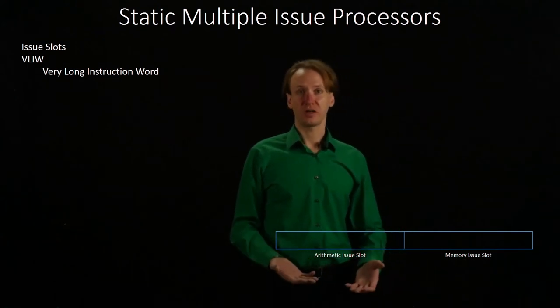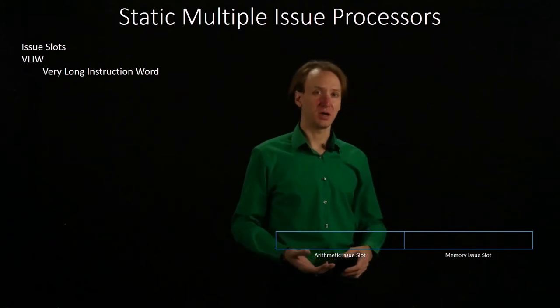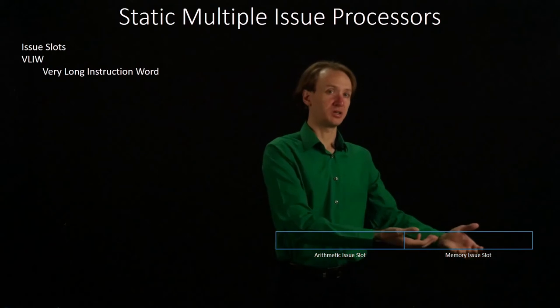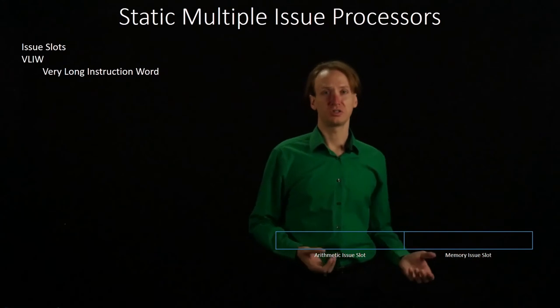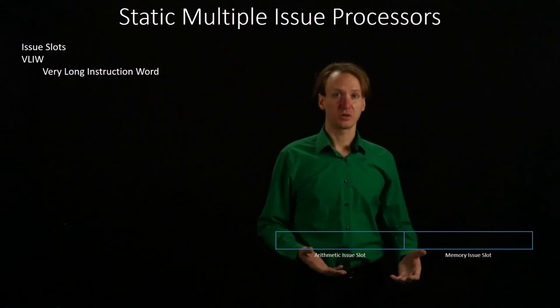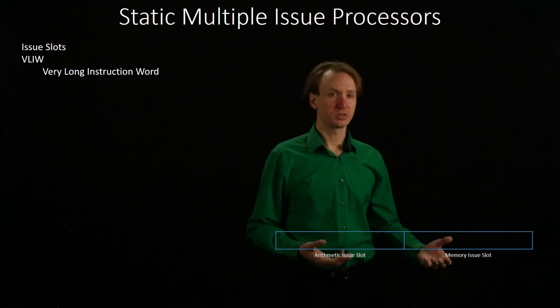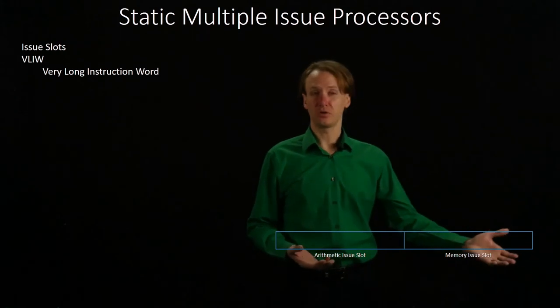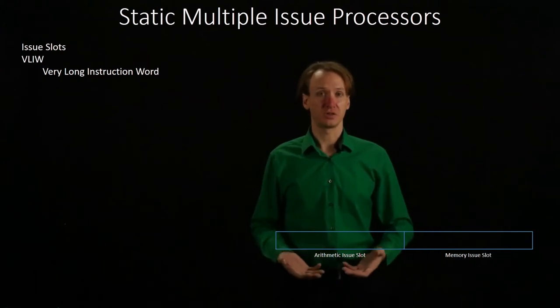In this case, if I have an arithmetic instruction, I can place that in the arithmetic issue slot, but I can't place it into the memory issue slot. If I have a memory instruction that I'd like to run at about the same time, then I can place that into the memory issue slot. This type of architecture will work well when you have lots of both types of instructions to run. In order to get good performance, you have to make sure all of your issue slots are being used. If some issue slots aren't getting used because you don't have enough memory instructions, then your performance isn't really improved over just having a single issue processor.